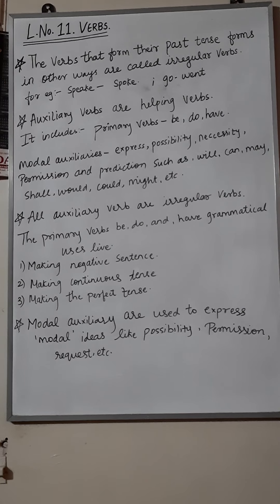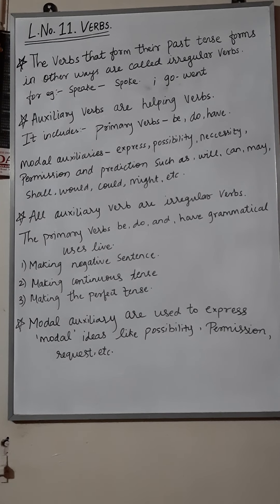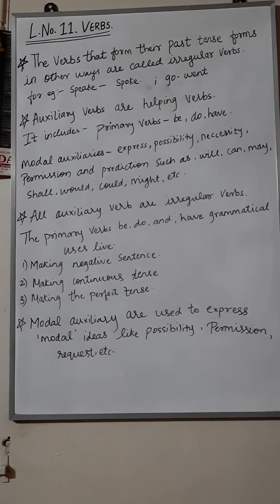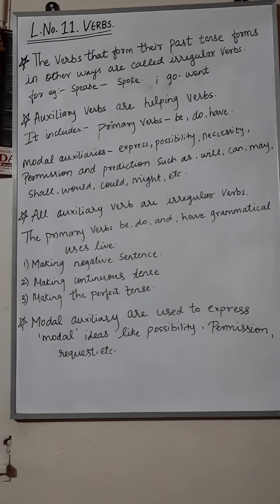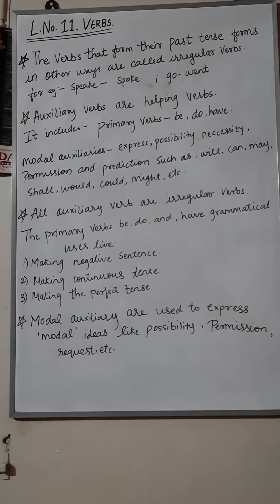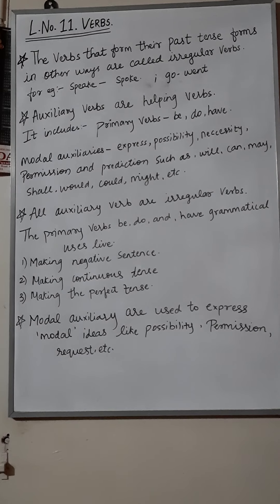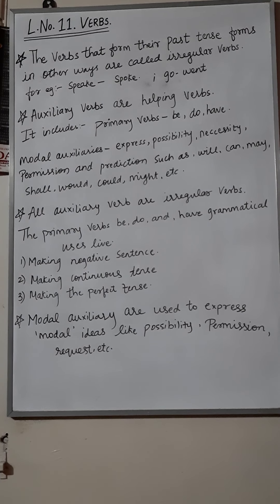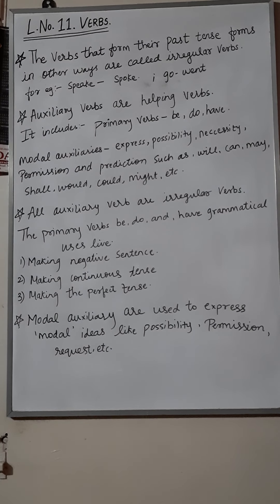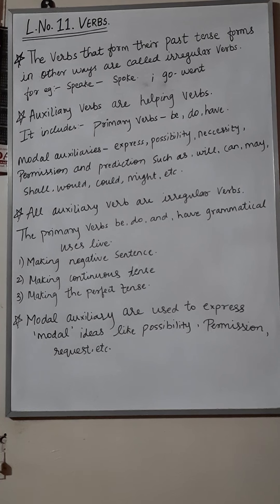For example, 'Satish can read Arabic' tells us the ability of Satish. 'You can have the cake now' expresses permission — someone is giving you permission. 'Could you please pass me the sugar?' is a request. So this was all regarding verbs — action and doing words — in which you learnt about main verbs, auxiliary verbs, transitive, and intransitive verbs. I hope you understood this lesson. Thank you.